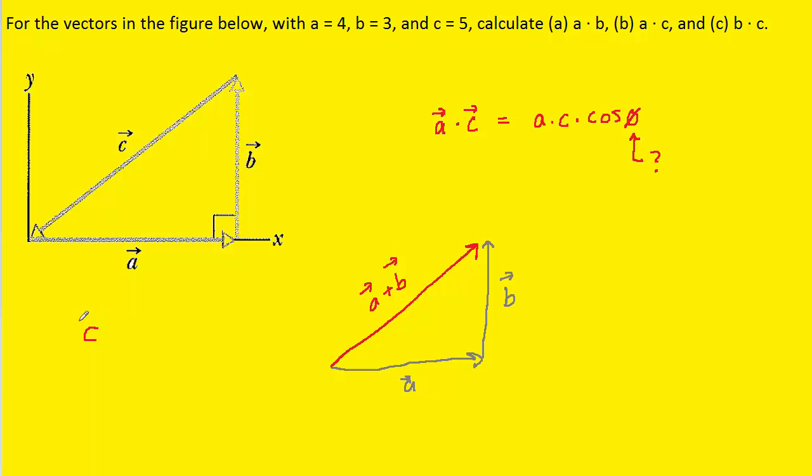So we can say, in other words, that vector C is equal to the negative of vector A plus vector B. Remember, if vector C had been pointing up and to the right, then we simply would have said that it's A plus B.